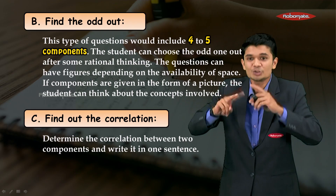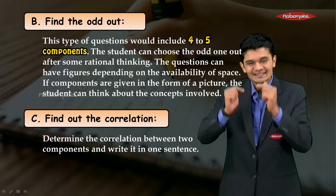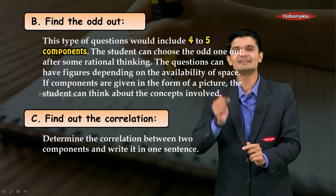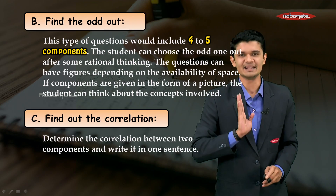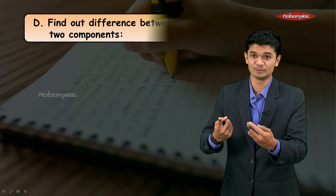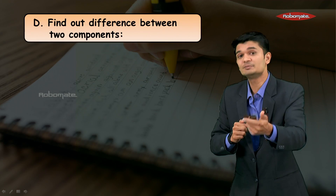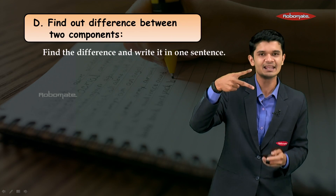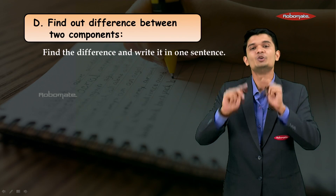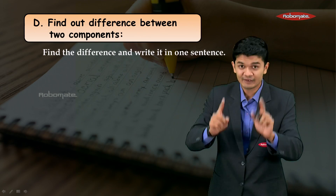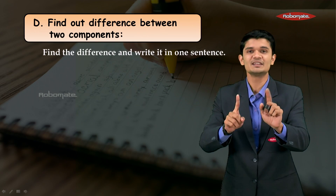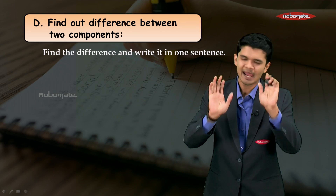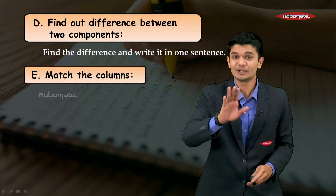Next, let's go for find the correlation. In these questions, two statements will be given and you have to find the relation between them, then write the answer in one complete sentence. The opposite is also possible — you might have to find the difference between two components. When you find the difference, write the difference of both statements in one simple sentence and you will still get full marks.